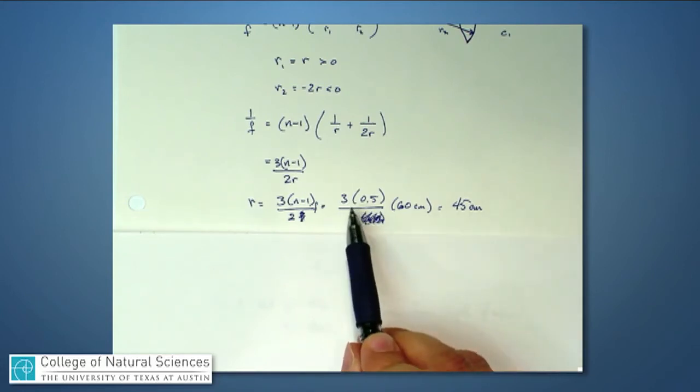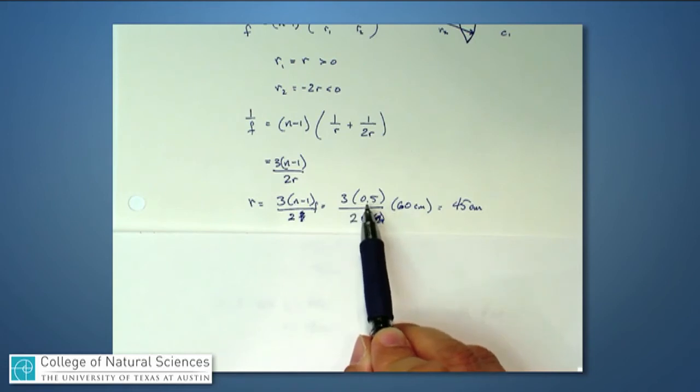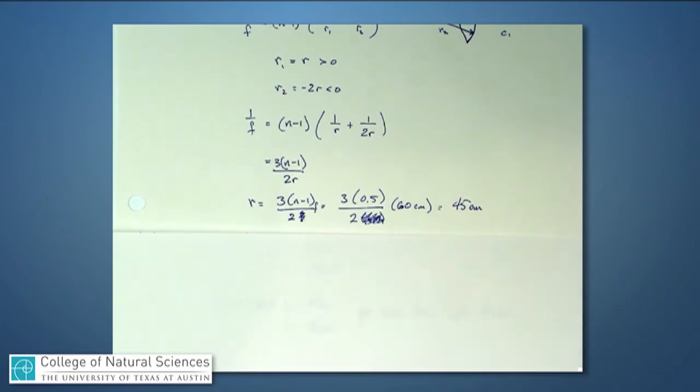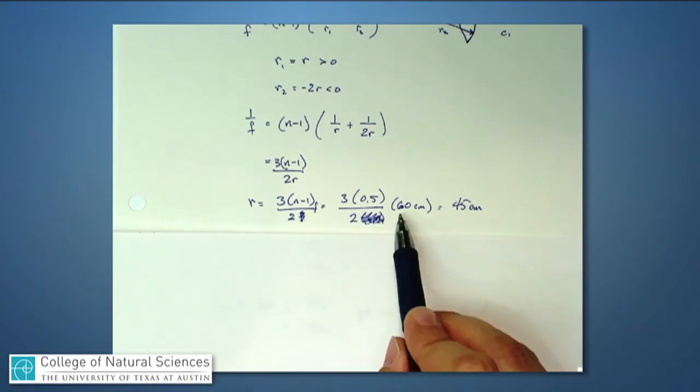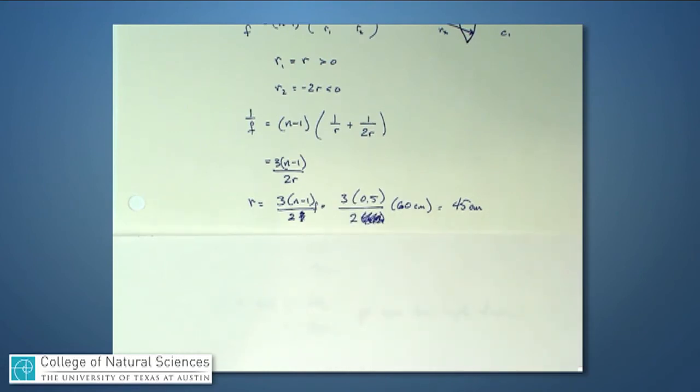So I have three times one and a half minus one, that's just a half, divided by two, all multiplying 60 centimeters. And this is a convex lens, we're told that because it's a positive focal length, so I put in plus 60 right here. So this is the same as three-fourths of 60, and that's 45 centimeters. That's what r is. So r1 is 45 centimeters.